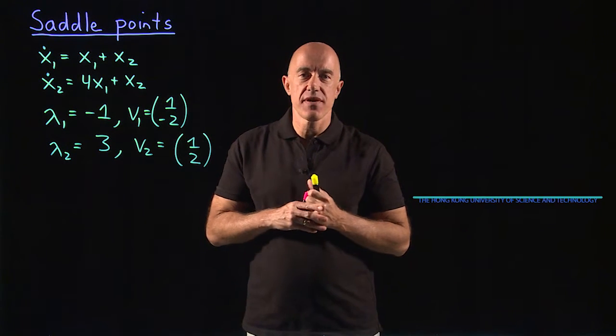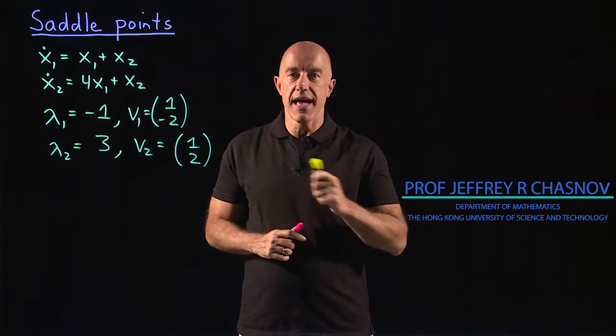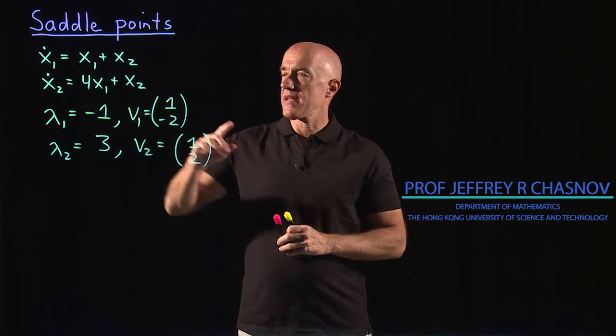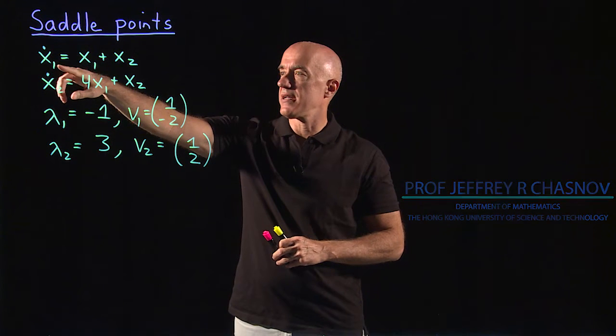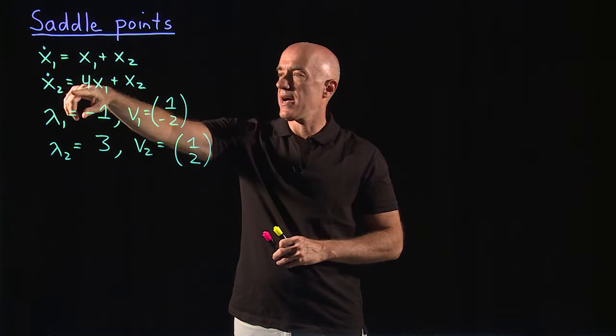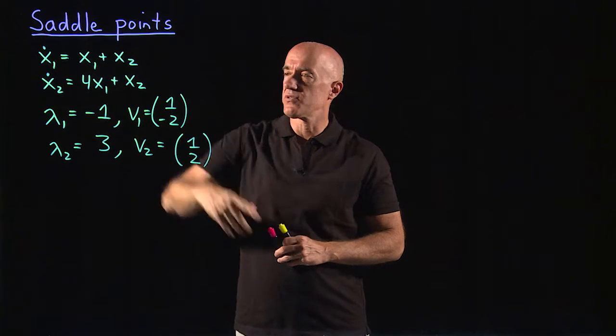Now let's look at the case where the fixed point is a saddle point. We look at the system of differential equations x1 dot equals x1 plus x2, x2 dot equals 4x1 plus x2.